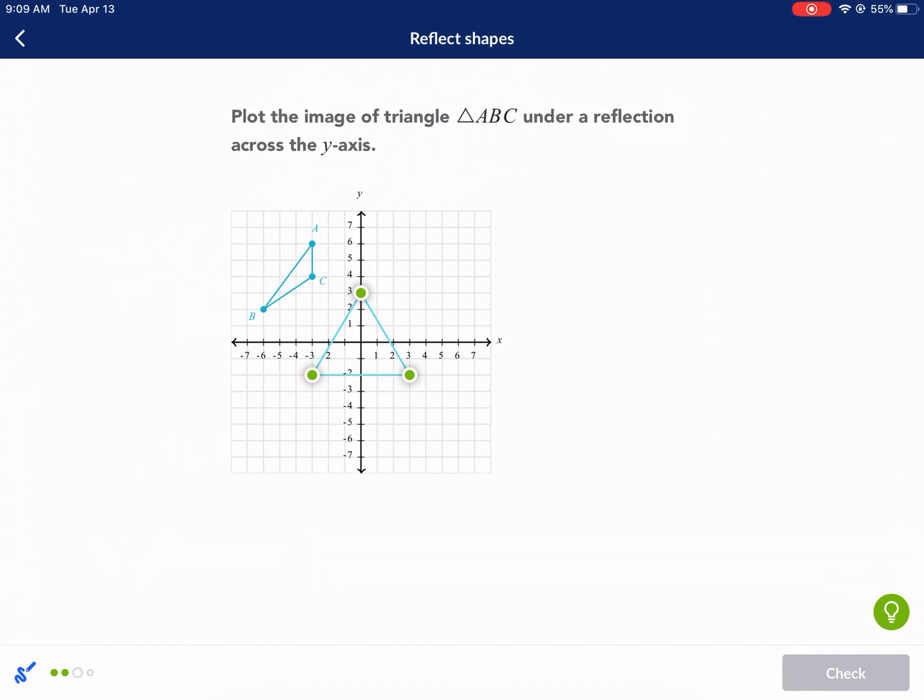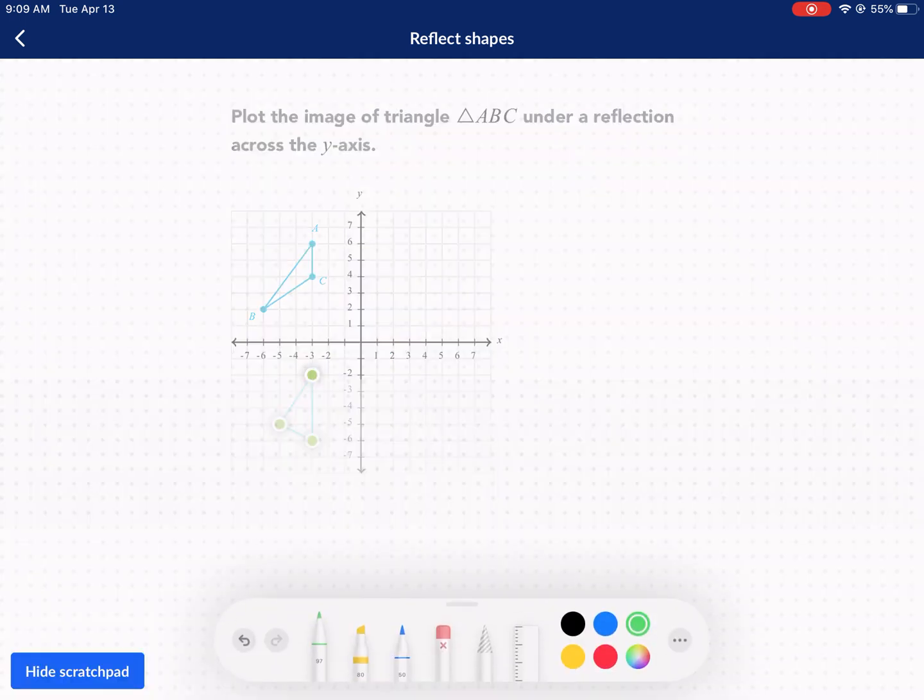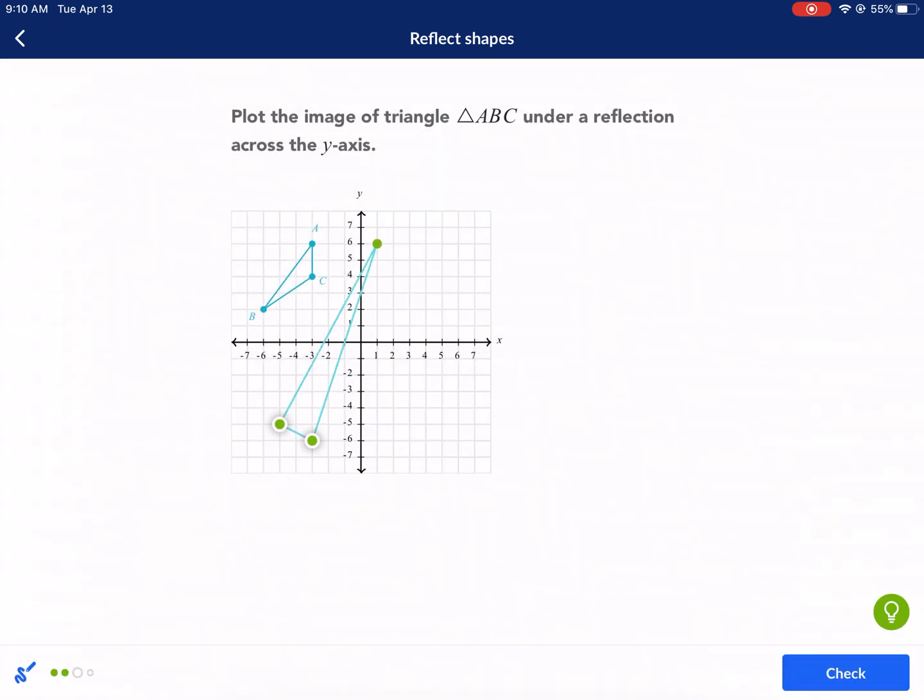Plot the image of triangle ABC under reflection across the y-axis. This time, it doesn't necessarily draw the line of reflection for us, but we know the y-axis is this guy right here. So now we're just going to be counting to the y-axis. So the y-axis is here. We're going to be reflecting across. So let's start with A. One, two, three units to the y-axis. One, two, three units across.